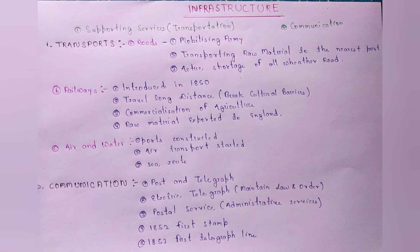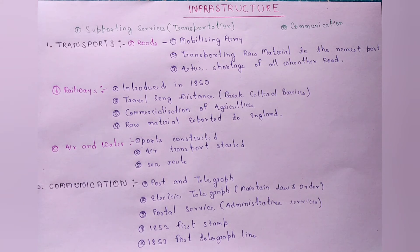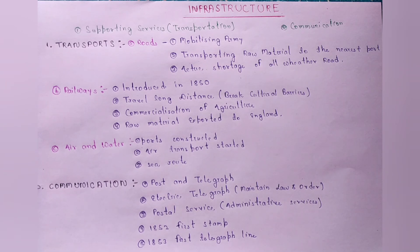Roadways construct करने के पीछे British के दो primary objectives थे। First primary objective था mobilizing army, और second primary objective था transporting of raw material। उस वक्त British army सिर्फ presidency states में limited थी, और British चाहते थे कि उनका army का control all over India हो। Roads construct करने के बाद उनका army mobilize हो गया और पूरे India में उनका control हो गया। दूसरा, raw material को nearest port या railway station तक पहुँचाना बहुत आसान हो गया, जहाँ से वो England के लिए export हो जाता था।